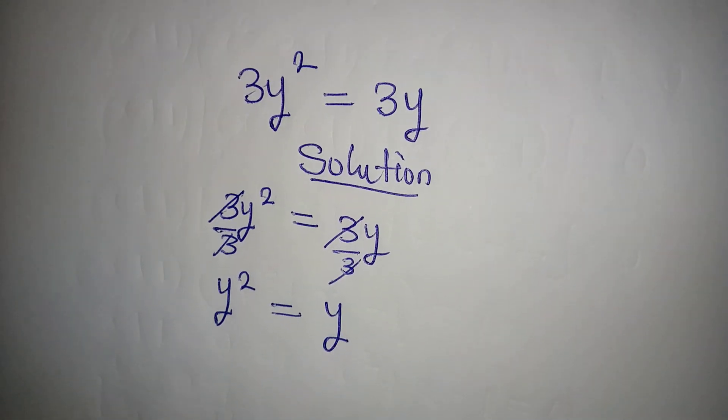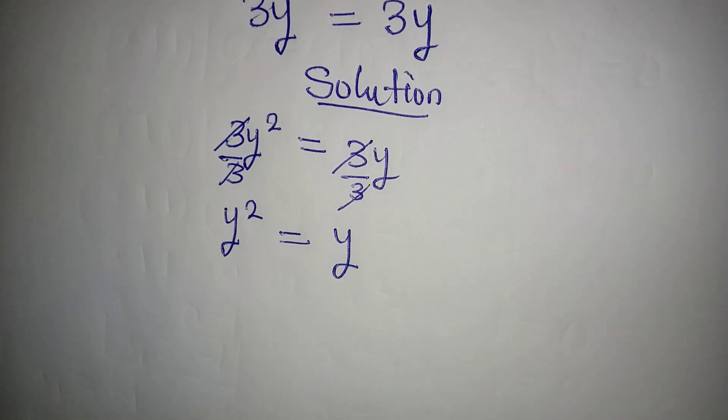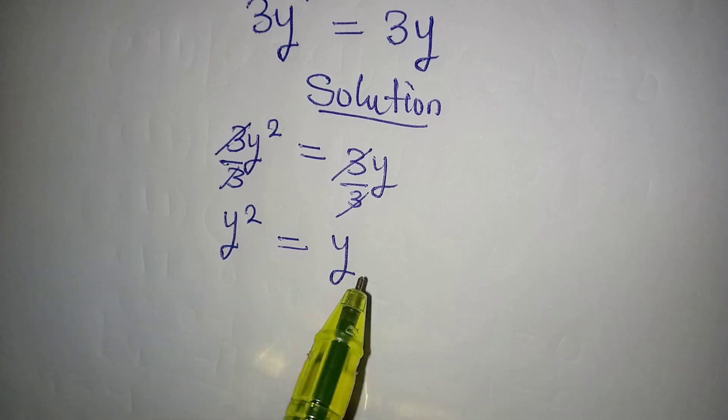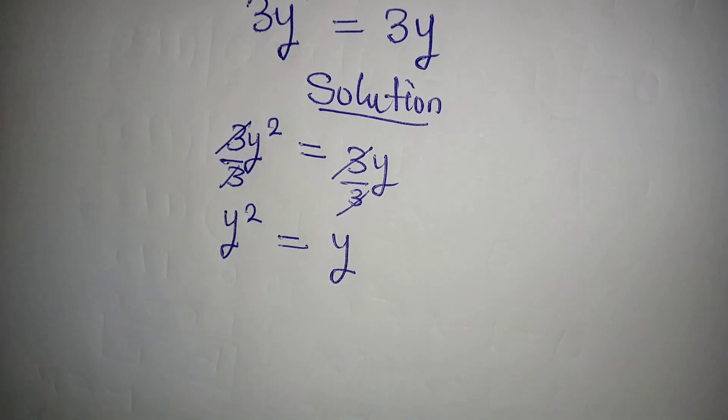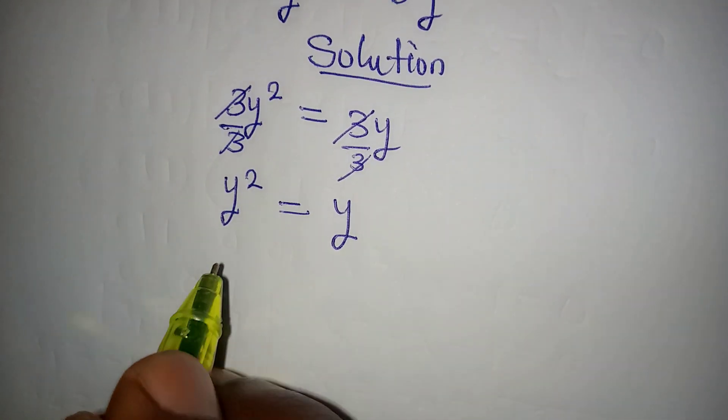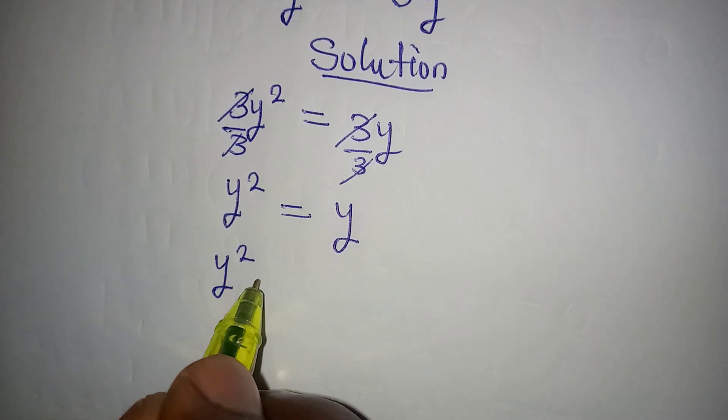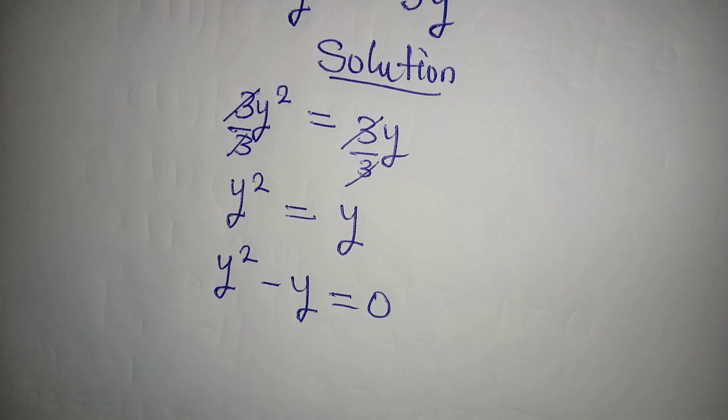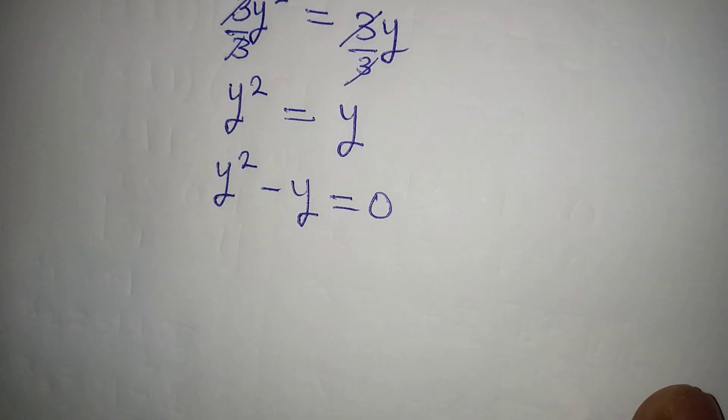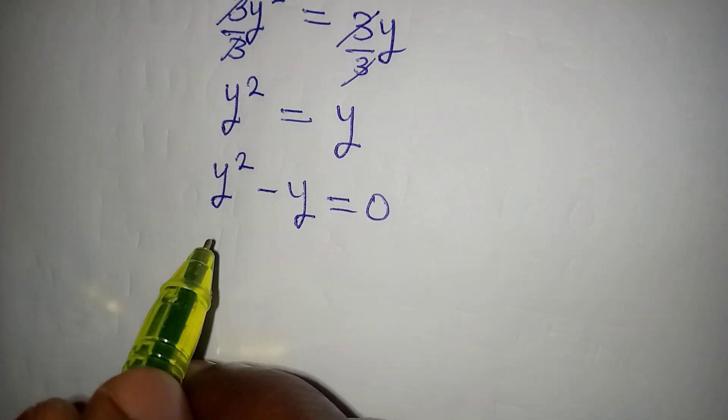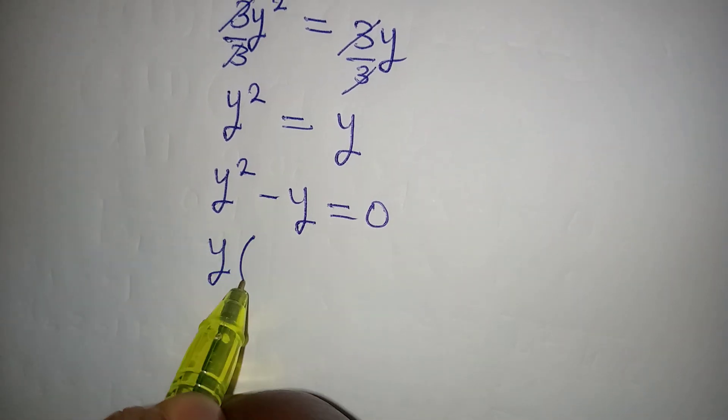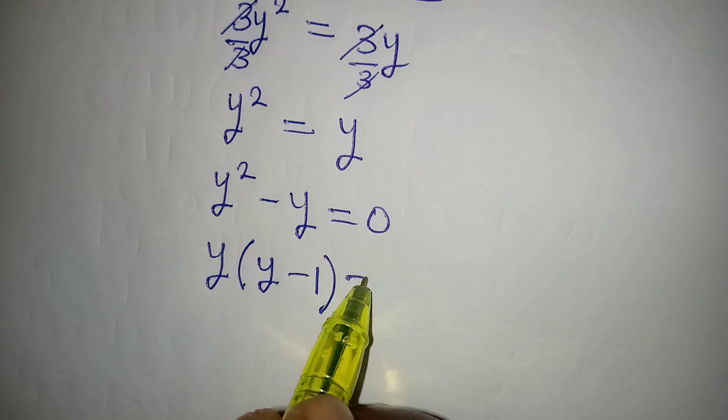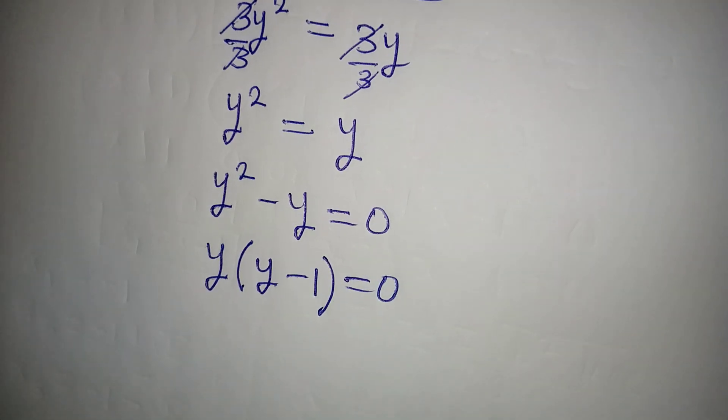From here you can no longer divide both sides by y because this is a quadratic equation, even though there is no constant. So y squared minus y is equal to 0. From here what do we do? We can factorize y out, then y will be here minus 1 equal to 0.